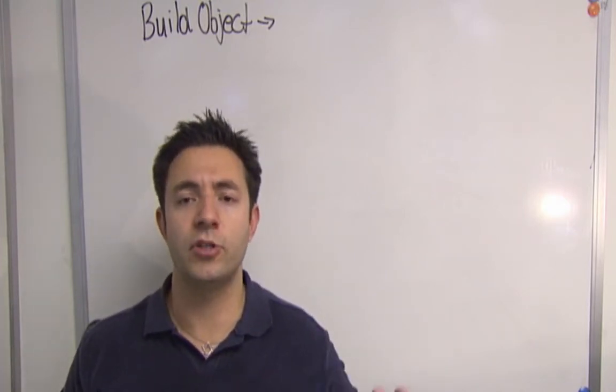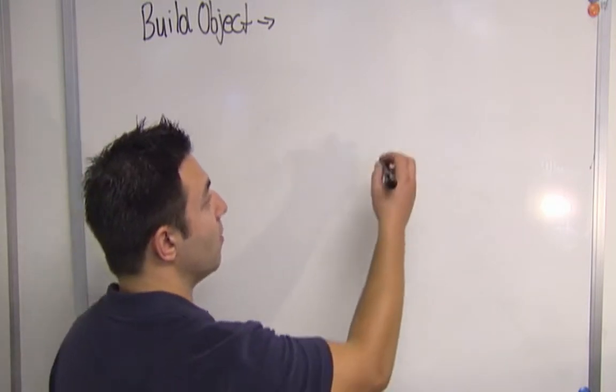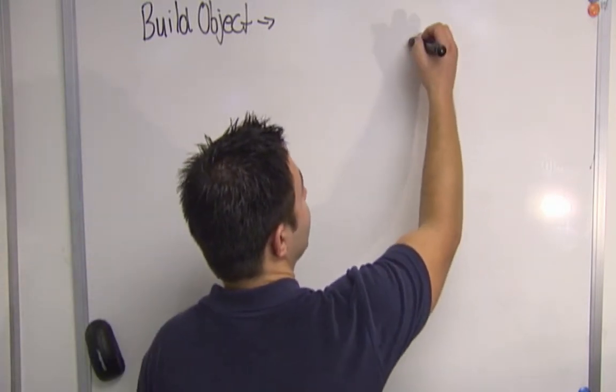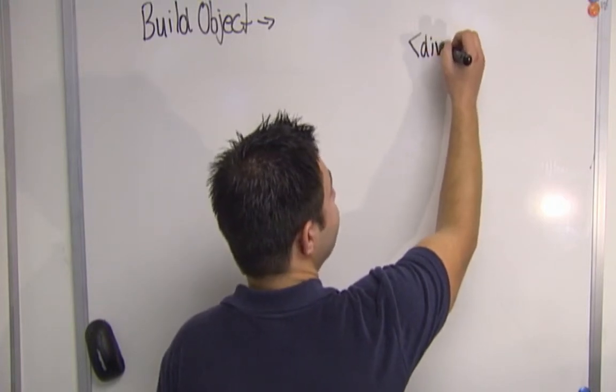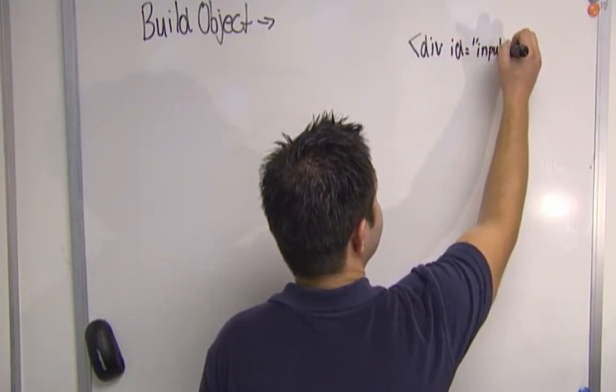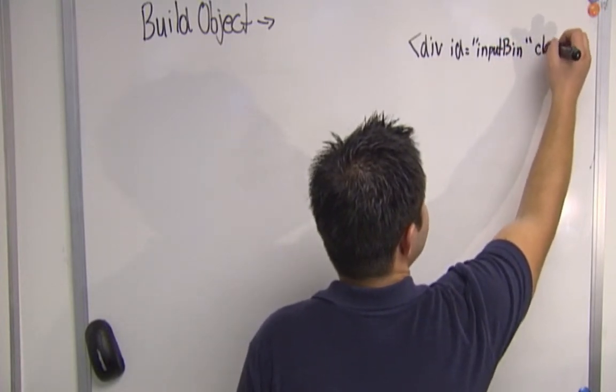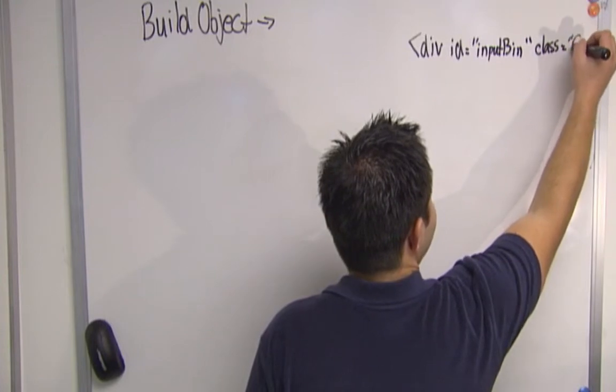Using the same HTML structure that we were just using with the input bin. So our end goal is we want to build this HTML structure. I want to build a div with ID input bin and a class of field.